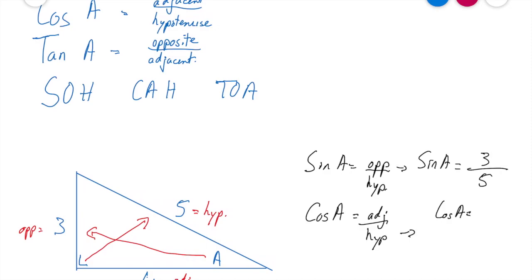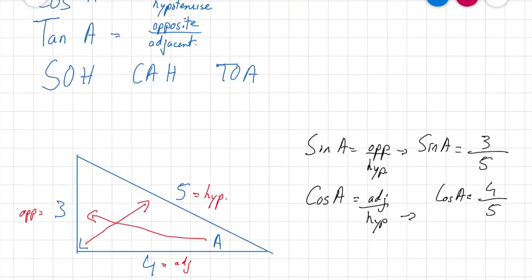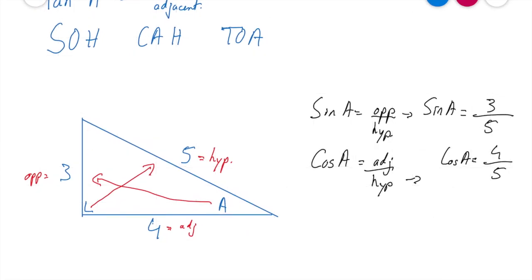So let's apply that to this triangle then. So cos A, therefore, is going to equal, what's my adjacent then? Well, my adjacent in this is 4, and my hypotenuse is 5. So this is going to be cos A equals 4 over 5.